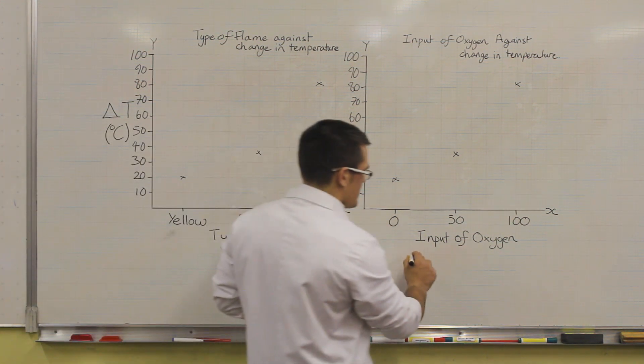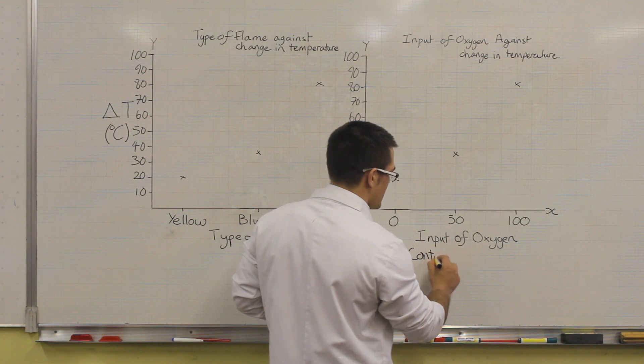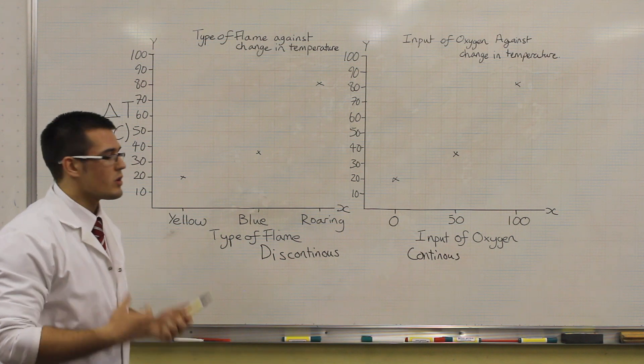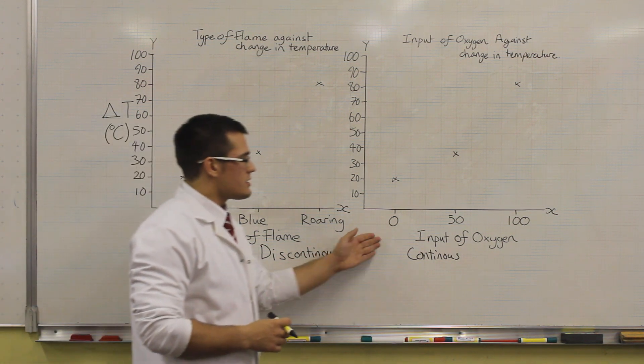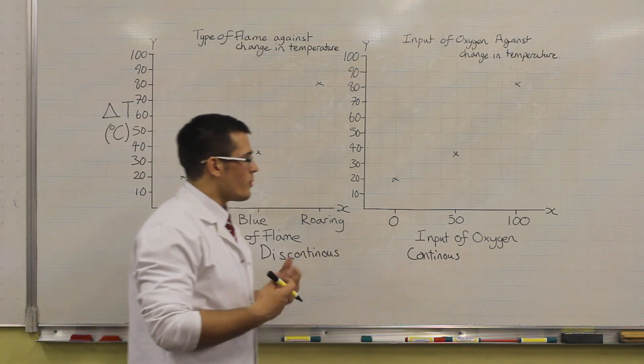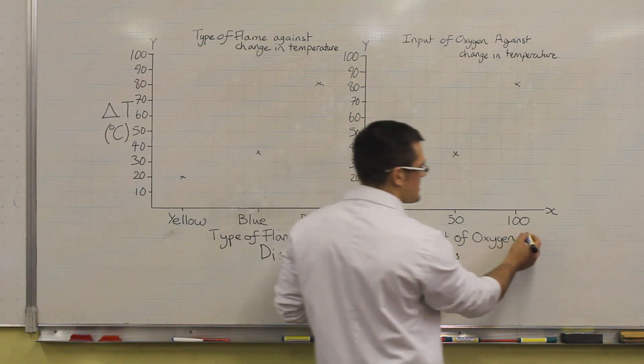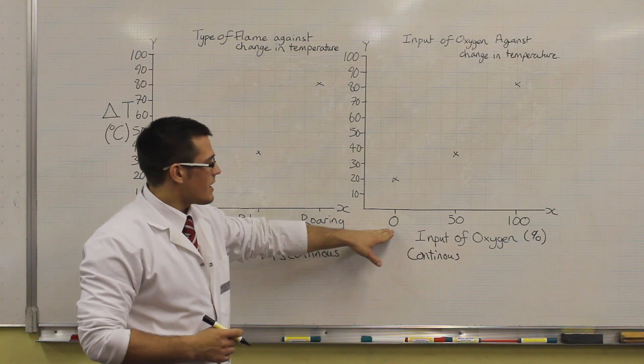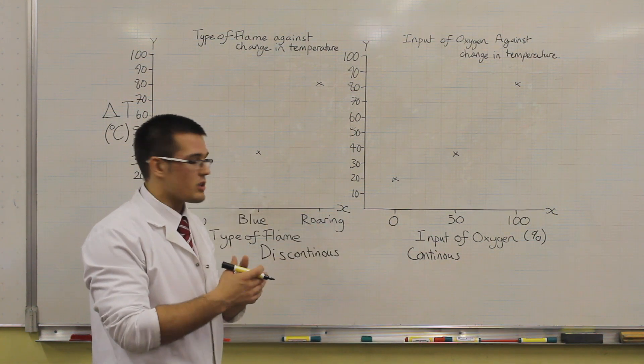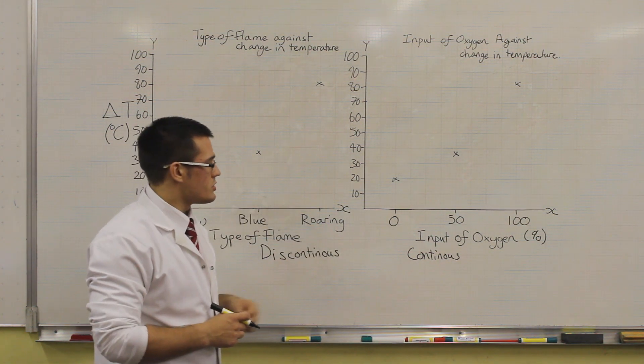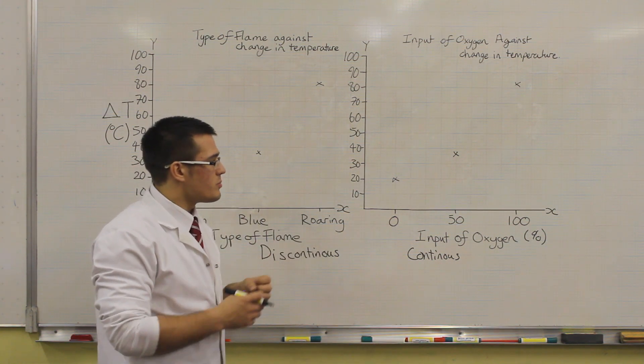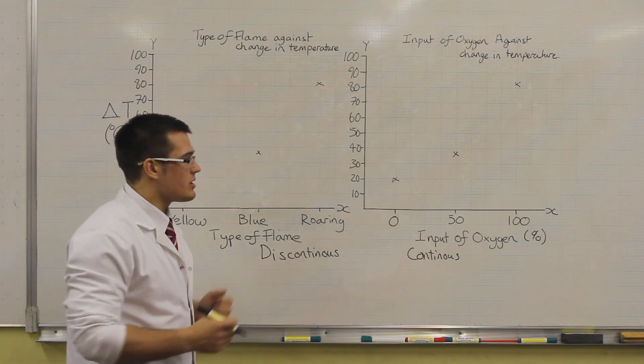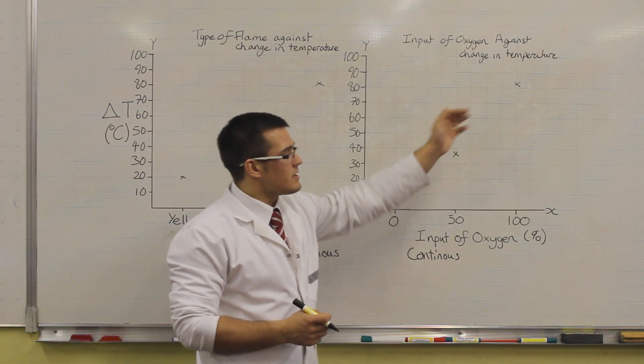If we decide to put our data as continuous data, that gives us a lot more options, because now we can say something quantitative. We've decided here to put the input of oxygen, and what we mean by this really is a percentage. That's a percentage of how open or closed the hole is. With our yellow flame, the hole is totally closed, we're getting incomplete combustion, and we're not adding any extra oxygen. But if we totally open the hole 100% and we allow that extra input of oxygen, now we can say something quantitative.